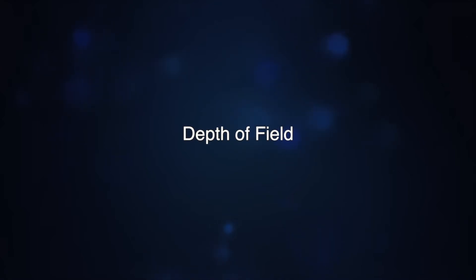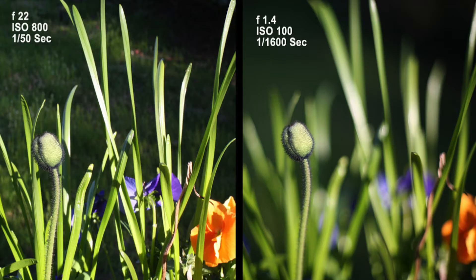Depth of field is the amount of area in your image that is under apparent focus. A higher F number gives you a high depth of field, and a lower F number gives a shallow depth of field.